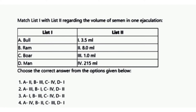The next is a match-the-following regarding the volume of semen in one ejaculation. List 1 has bull, ram, boar, and man. List 2 has 3.5 ml, 8 ml, 1 ml, and 250 ml. The correct answer is option 1: bull 8 ml, ram 1 ml, boar 250 ml, and man 3.5 ml volume of semen per ejaculation.